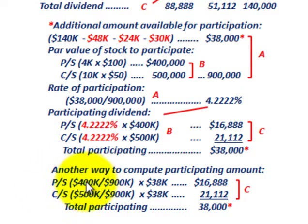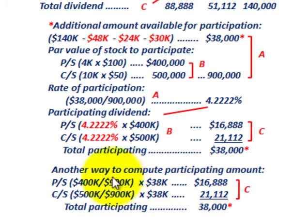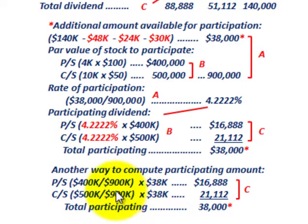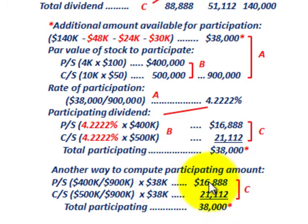For our preferred stock, we take $400,000 — the total par value — divided by $900,000, the total par value for both common and preferred stock, times the $38,000 remaining to be allocated. That fractional amount times $38,000 gives us $16,888 for preferred stock. For common stock, the same thing: total par value of common stock divided by $900,000, times $38,000, gives us $21,112. Adding those two amounts together, we get the total participating amount of $38,000.